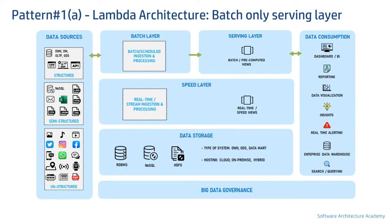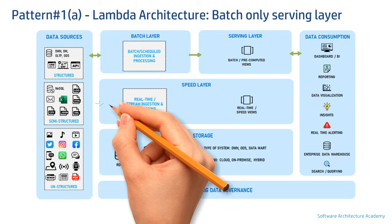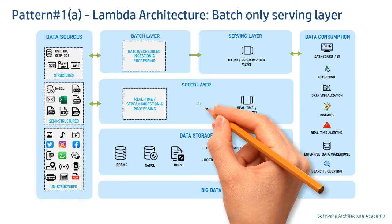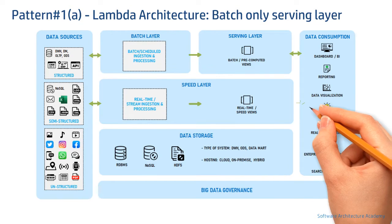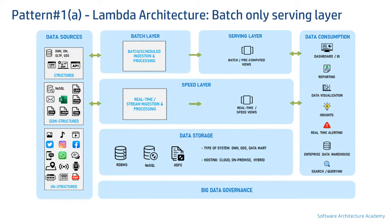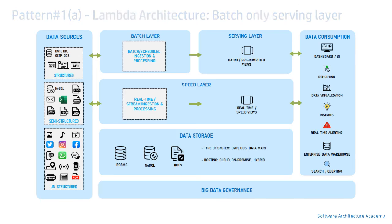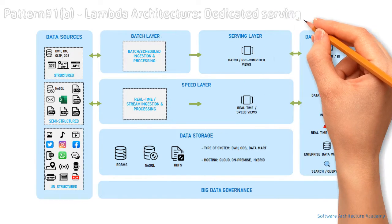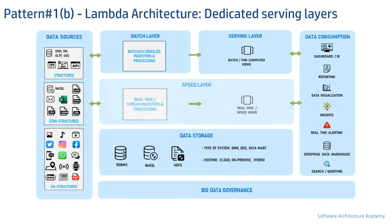As discussed earlier, a Lambda architecture is a combination of batch and real-time processing. The real-time processing is enabled via what is known as a speed layer. In this first variant, the speed layer ingests, computes, and produces output to be directly utilized by the consumption layer.